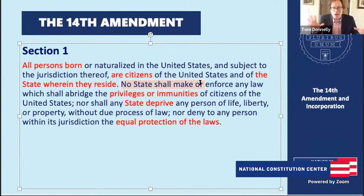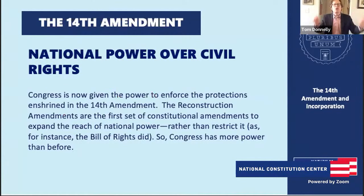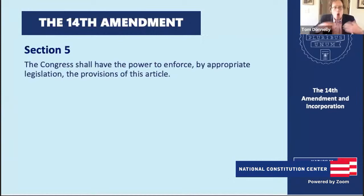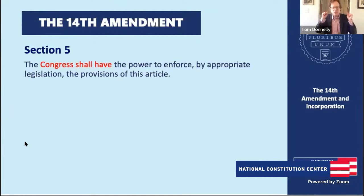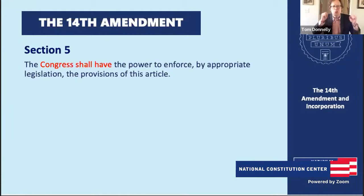The last big idea is a national protection of civil rights. This is Section 5 of the 14th Amendment, giving Congress new powers to protect all of the rights found in the 14th Amendment. The language reads: 'The Congress shall have the power to enforce by appropriate legislation the provisions of this article.' Congress is now given more power than it had before. The Reconstruction Amendments — the 13th, 14th, and 15th — are the first amendments that give the national government more power, rebalancing the relationship between the national government and the states.